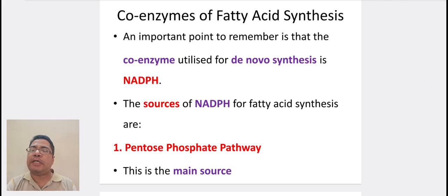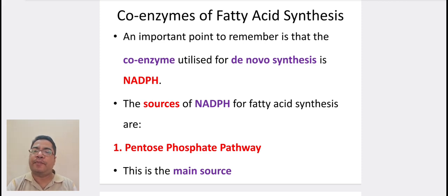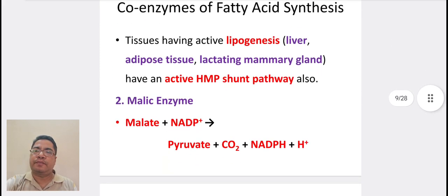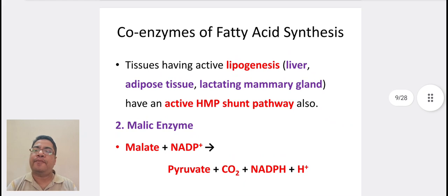Coming to the coenzymes of fatty acid synthesis. An important point to remember is that the coenzyme utilized for de novo synthesis is NADPH. The sources of NADPH for fatty acid synthesis are: first, the pentose phosphate pathway — this is the main source. Tissues having lipogenesis, like liver, adipose tissue, and lactating mammary gland, have an active HMP shunt pathway.